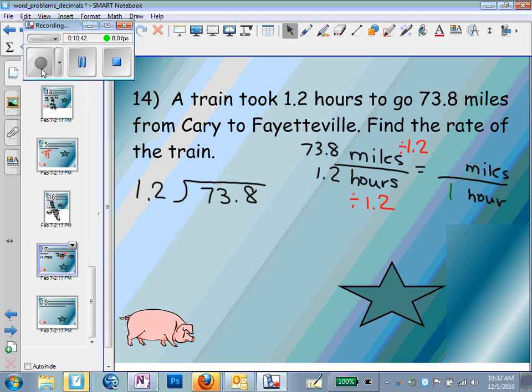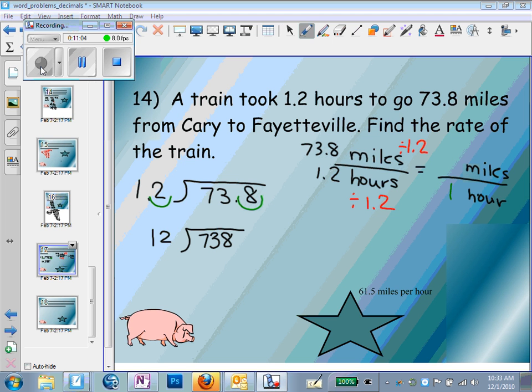So I'm going to divide 1.2 into 73.8. I'm going to move this decimal over one place, and then I'm going to move this decimal over one place, because I can't divide by a decimal. If I do that, I also have to move it over one place in the number I'm dividing into. So ultimately, I'm dividing 12 into 738. And my answer, I'm going to get 61.5 miles per hour. So in my ratio, I now have 61.5 miles in one hour. When you're working with miles per hour, you always want to divide by however many hours.